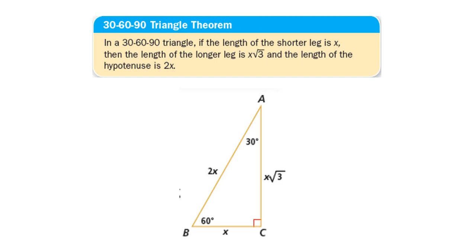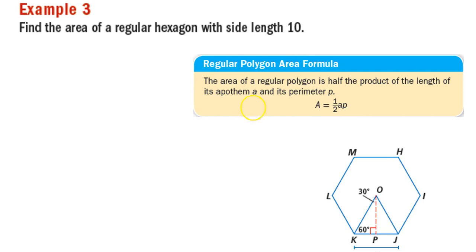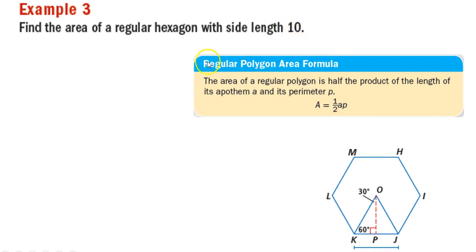We can use that in example 3, where we have to find the area of a regular hexagon with a side length of 10, using the regular polygon area formula.